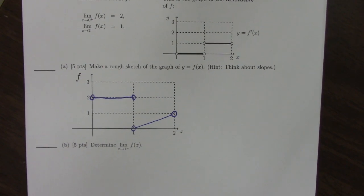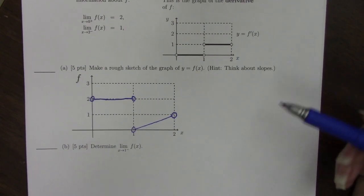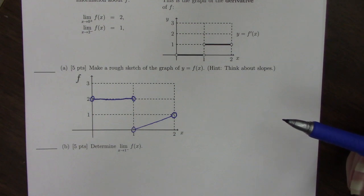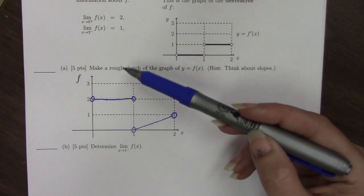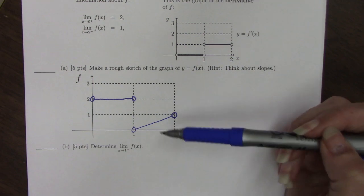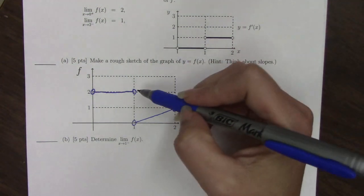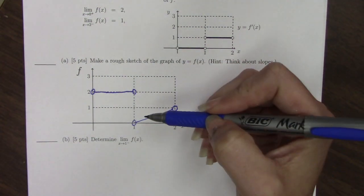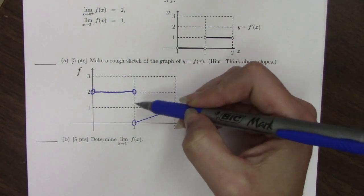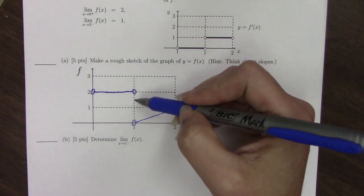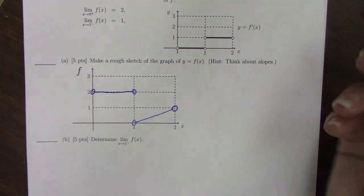You also want to make sure when you're done with your graph of f that it passes the vertical line test. If we were to draw a vertical line anywhere on this function, it doesn't cross it more than one time. This is a perfectly acceptable final answer. If you were to bubble in this or bubble in this, that would also be okay, but you could never do both because then it would fail the vertical line test.